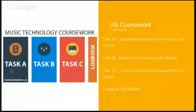So the coursework for AS, as well as A2, is made up of three tasks: Task A, Task B, and Task C. In the AS specification you've also got 20 marks for the logbook. A and C are each weighted at 40 marks. Task A is a sequence realisation — a realised performance — where students create a song given to you by Edexcel in the portfolio. This year it's La La La, which hopefully is a good one. You're going to have to recreate it to the absolute specification so it sounds almost identical, using only MIDI editing — no audio involved in that one.